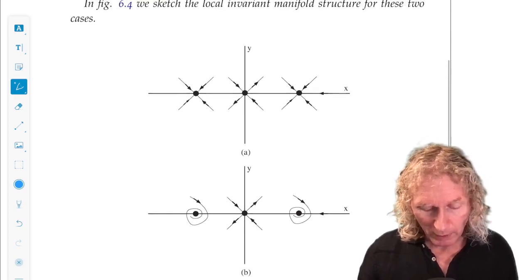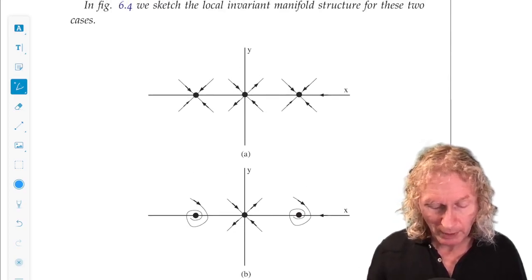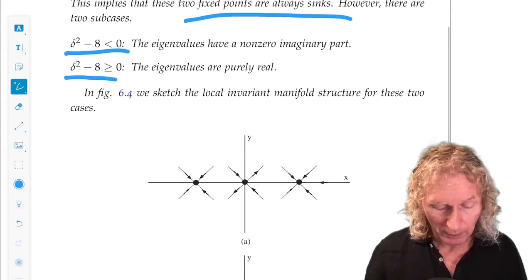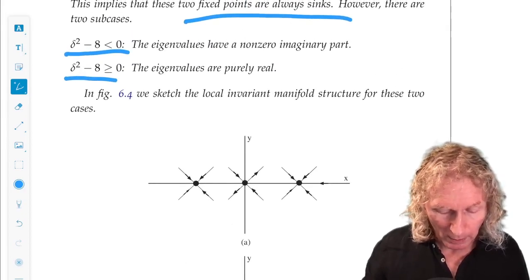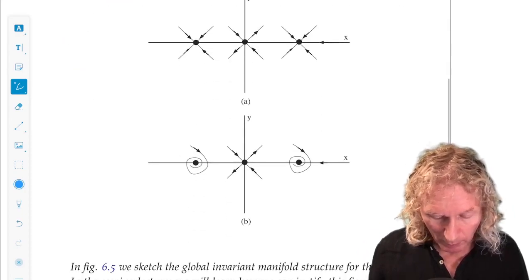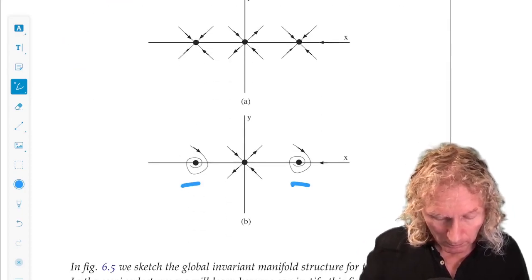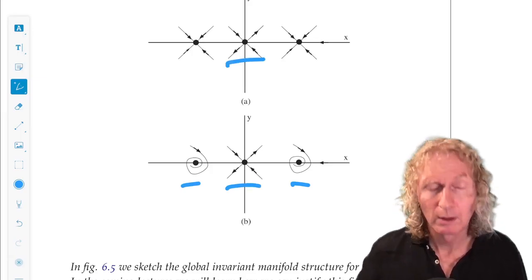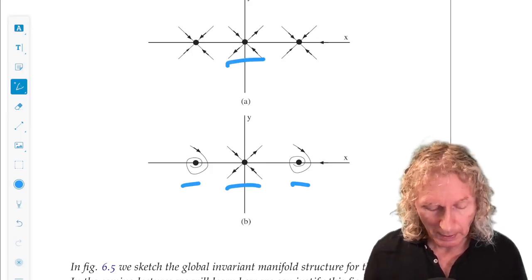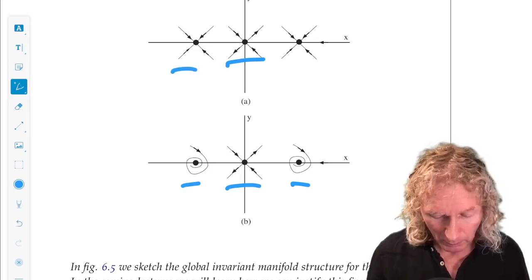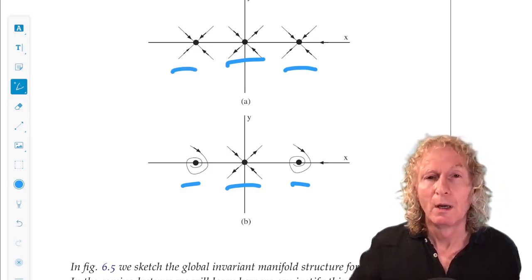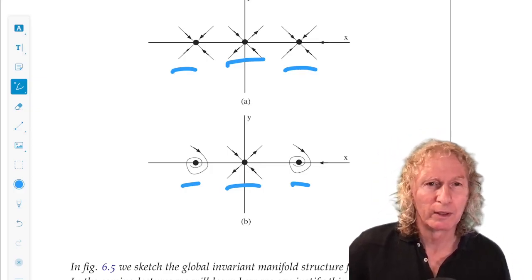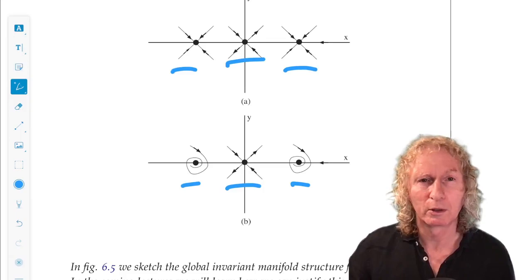So this is what the local stable and unstable manifolds look like in the two cases. In the case where we have non-zero imaginary part of the spiraling around, the origin, remember, is always saddle. And in the case where we have purely real trajectories, just approach the equilibrium points at minus one and plus one along lines.